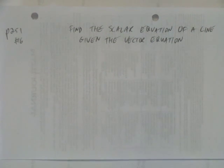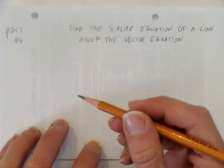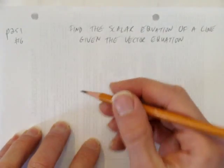In this video, we'll look at how to find the scalar equation of a line given the vector equation. And this is right from your textbook, page 251, number 6. So, 251, number 6, and let's do, say, 6a.